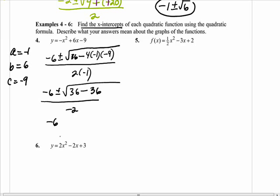What's going to happen to the value inside? It's going to be 0. Really, we're not plussing or minusing anything. It's negative 6 over negative 2, because this is really negative 6 plus or minus root 0. That equals 3.